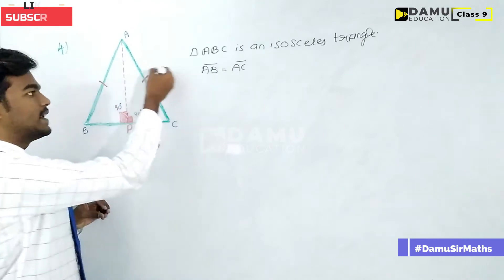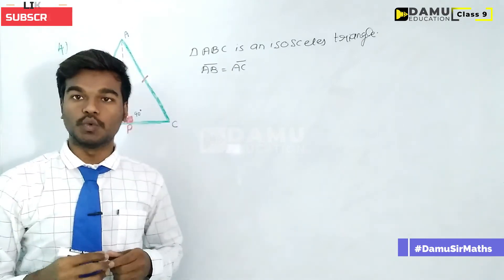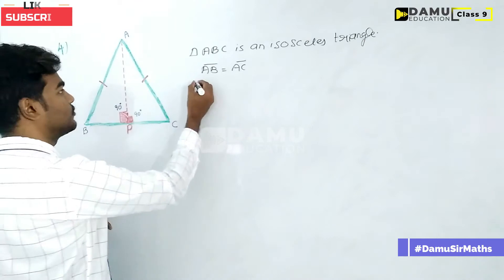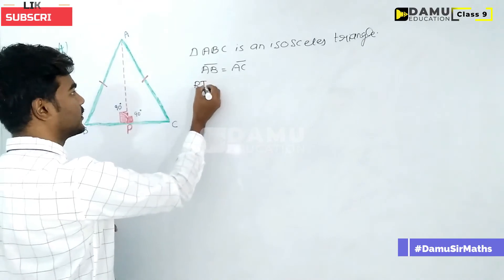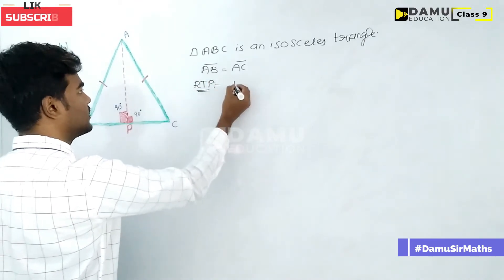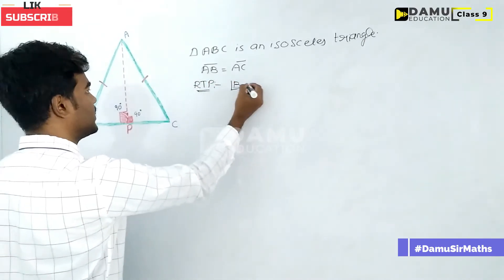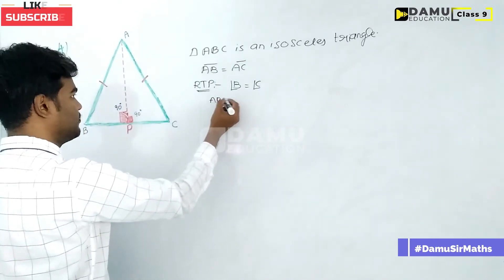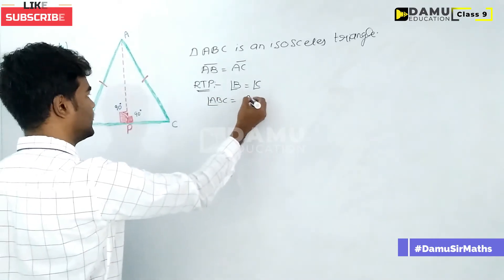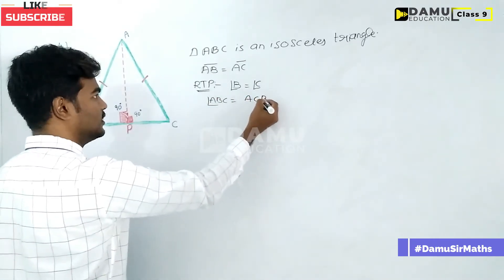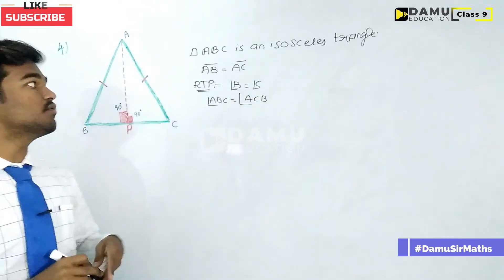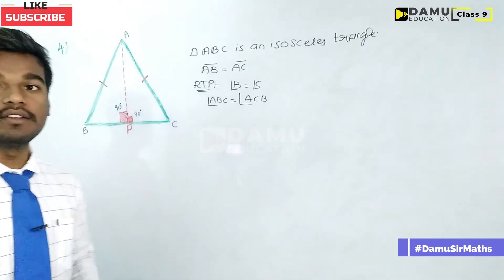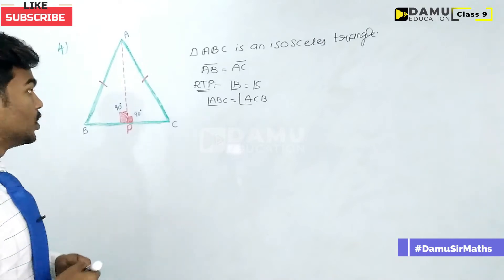So RTP is: angle B will be equal to angle C, or you can write angle ABC is equal to angle ACB. This is the required thing we have to prove.